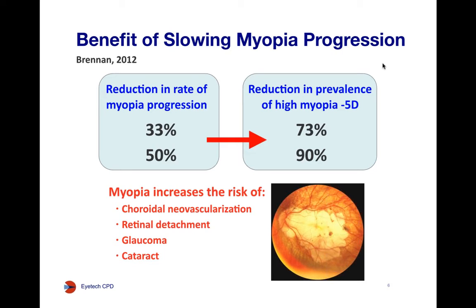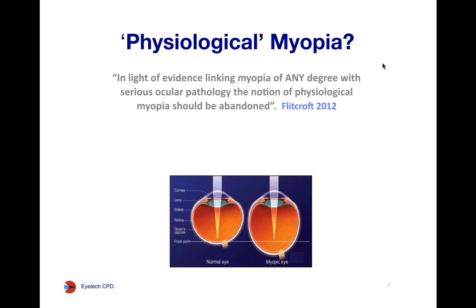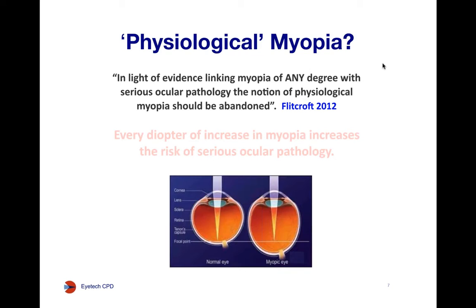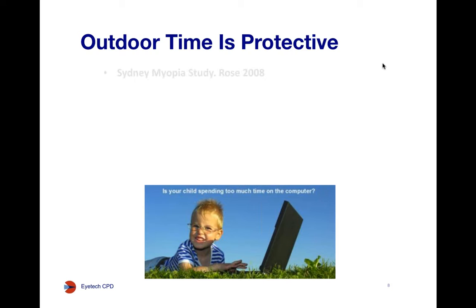We have an interest in this because myopia increases the risk of very serious ocular pathologies — it is clearly not just a refractive anomaly. Ian Flitcroft's 2012 paper, forty-odd pages of complex thinking on myopia, argues that the idea of physiological myopia is somewhat a furphy, given that any level of myopia carries an increased risk of ocular pathology. For every diopter of increase, the level of that risk increases — so even low myopia is a problem.